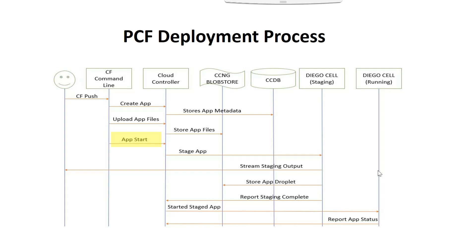Once the droplet is stored in the blob store it will report back to the cloud controller, and the cloud controller will start the staging application. Starting the staging application is nothing but creating a new container where the droplet — meaning your application along with the runtime environment — will run. In the end it will show us the status as successful or failure.